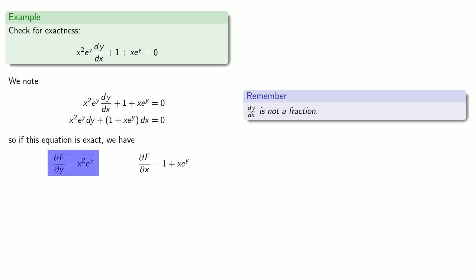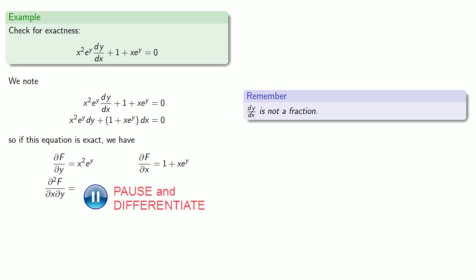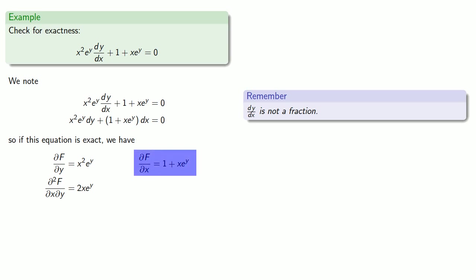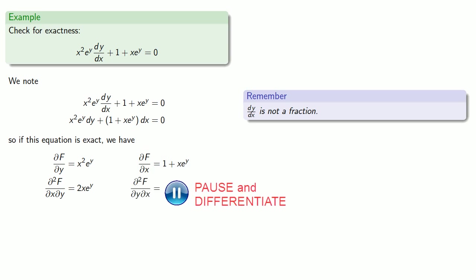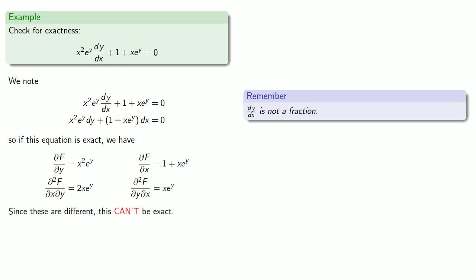Here I've already differentiated with respect to y, so I'll differentiate with respect to x. And here I've already differentiated with respect to x, so I'll differentiate with respect to y. Since these results are different, this equation can't be exact.